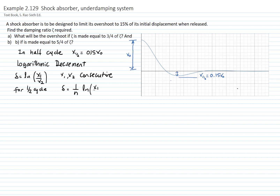In general, when we want to relate two amplitudes that are not consecutive in one cycle, we have to divide by n, which is the number of cycles. In this case it will be one-half, because we want to relate the initial displacement with the displacement at half of the cycle. So we write the logarithmic decrement as one-half times the logarithm of the initial displacement x₀ over the displacement at 15% of the initial displacement. That gives a value of 3.794.